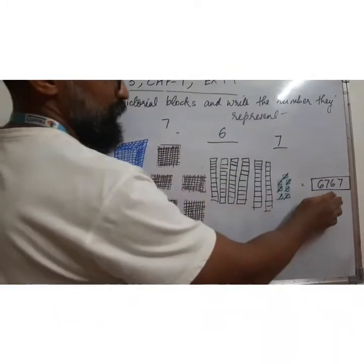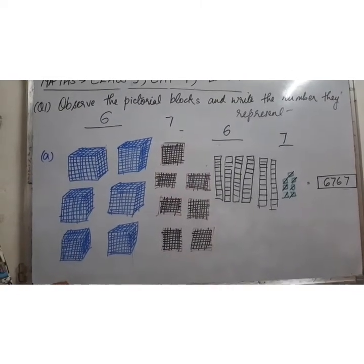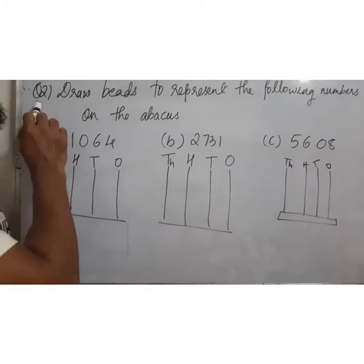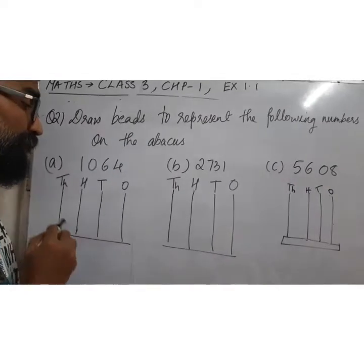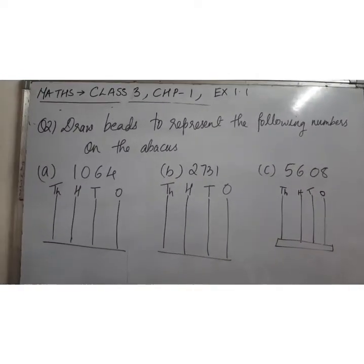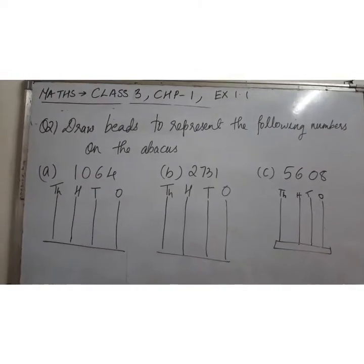So if you see the number it's 6, 7, 6, 7. So this is how you're going to represent the number. We're done with question number 1 and we'll be doing question number 2. So guys, now we're going to do question number 2, which says draw beads. Beads means small motis. In abacus. So the first number is 1, 0, 6, 4. How to read it? Place value.